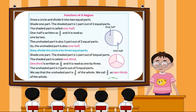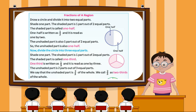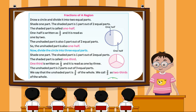Now divide the circle into three equal parts. Shade 1 part. The shaded part is called 1 third, written as 1 by 3 and read as 1 by 3. The unshaded part is two parts out of three equal parts. We say the unshaded part is 2 by 3 of the whole.